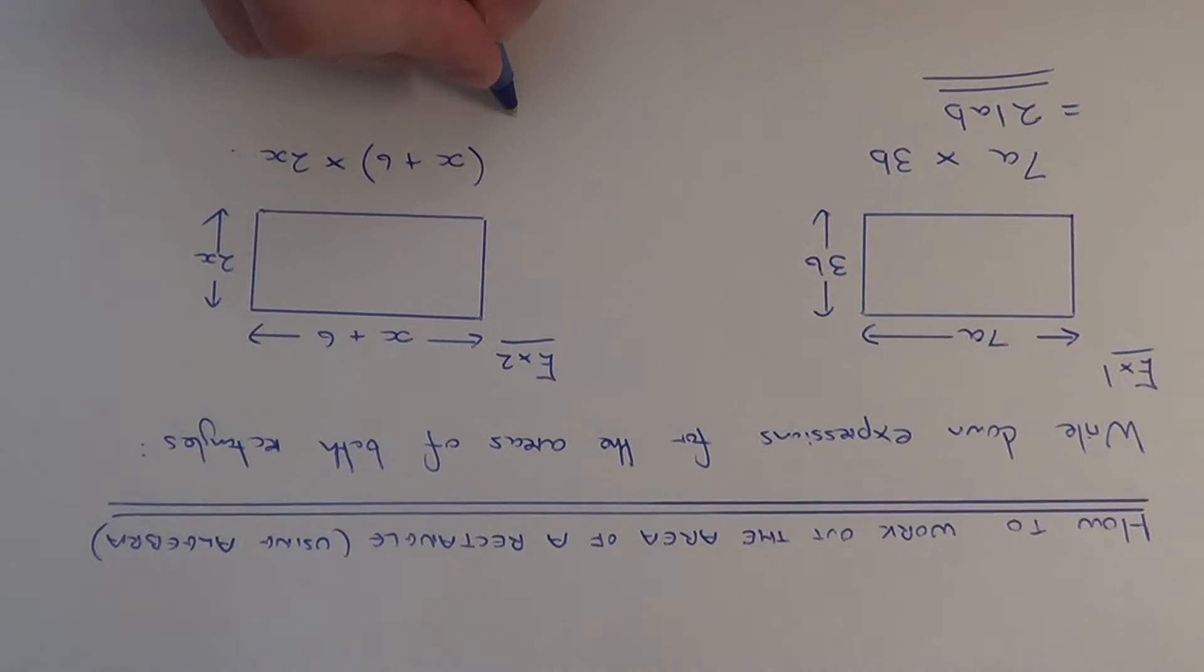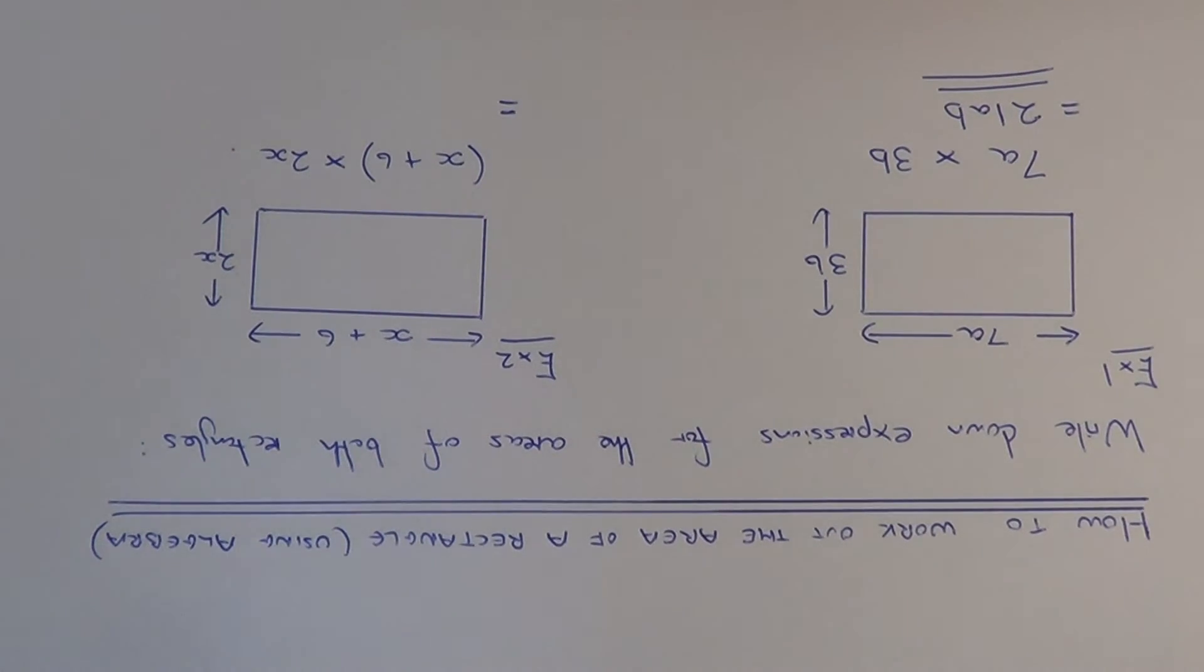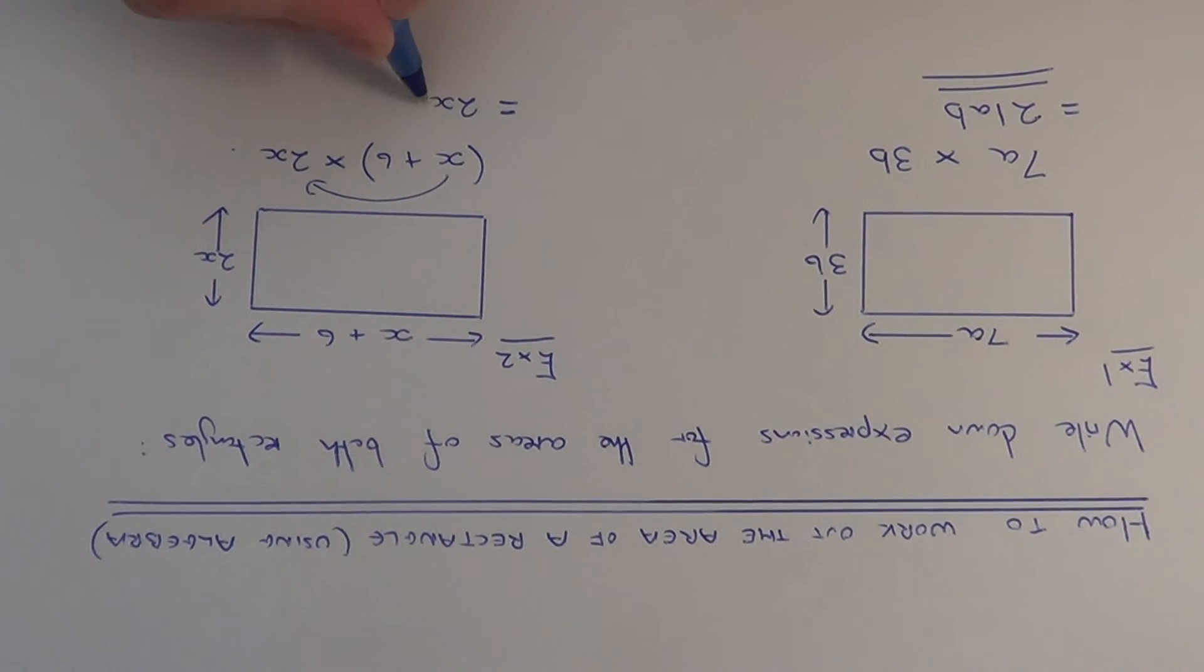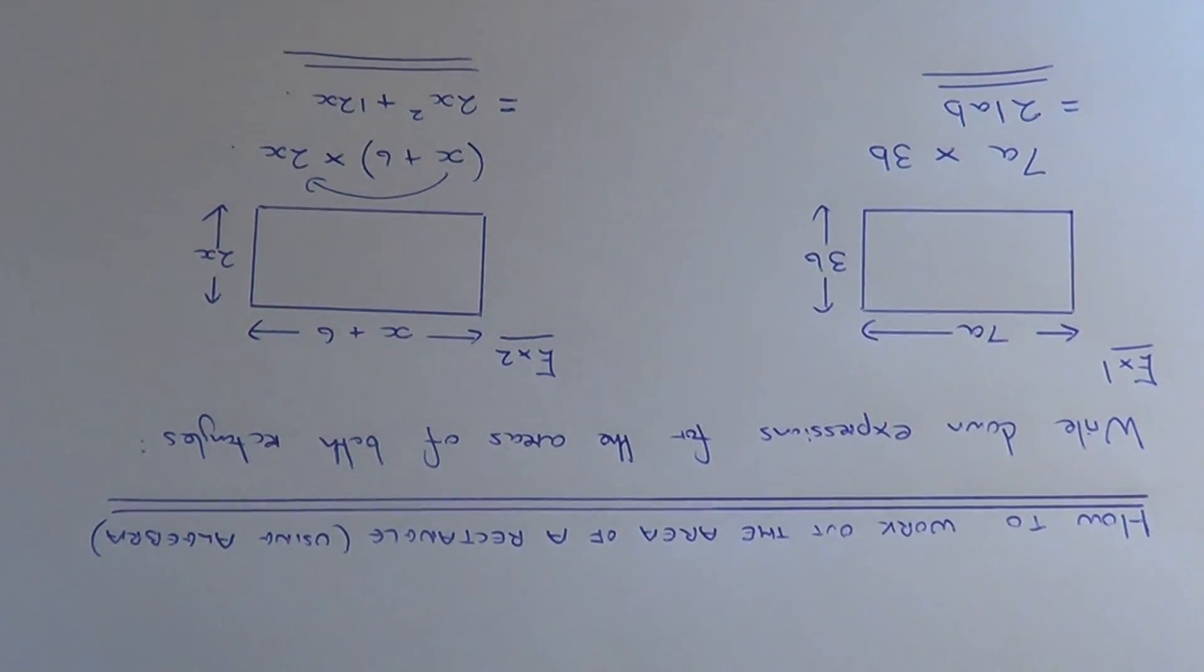We just need to expand this bracket out. x times 2x is 2x squared, and 6 times 2x is plus 12x. This is your final answer. Thanks for watching.